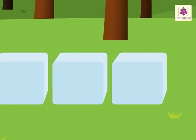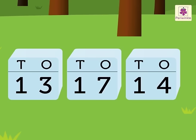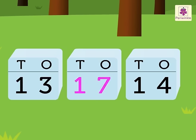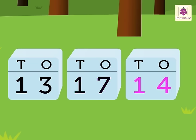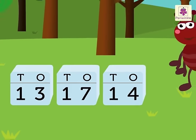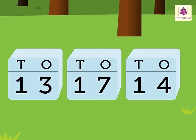Look at the sugar cubes. Each sugar cube has a number written on it in the form of tens and ones. The numbers are 13, 17, and 14. Let's arrange 13, 17, and 14 in ascending order with the help of Taub. Let's compare the ones, as each number has 1 ten.